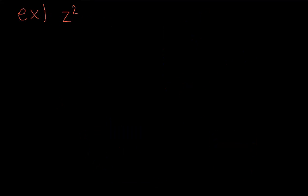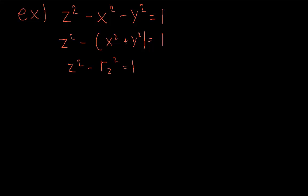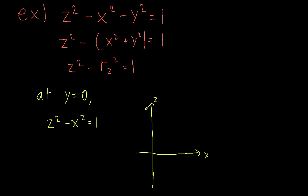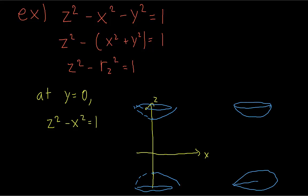Let's look at one more example. First, verify that you can write it in terms of z and the distance from the z-axis. Now we need to find the curve to rotate about the axis, so again we look at the xz-plane for positive values of x. Setting y equal to zero, the curve in the xz-plane is z squared minus x squared equals one. This is an up-and-down hyperbola. When we rotate this curve around the z-axis, we get something like two small bowls. Note that this quadratic surface is actually made up of two separate parts.